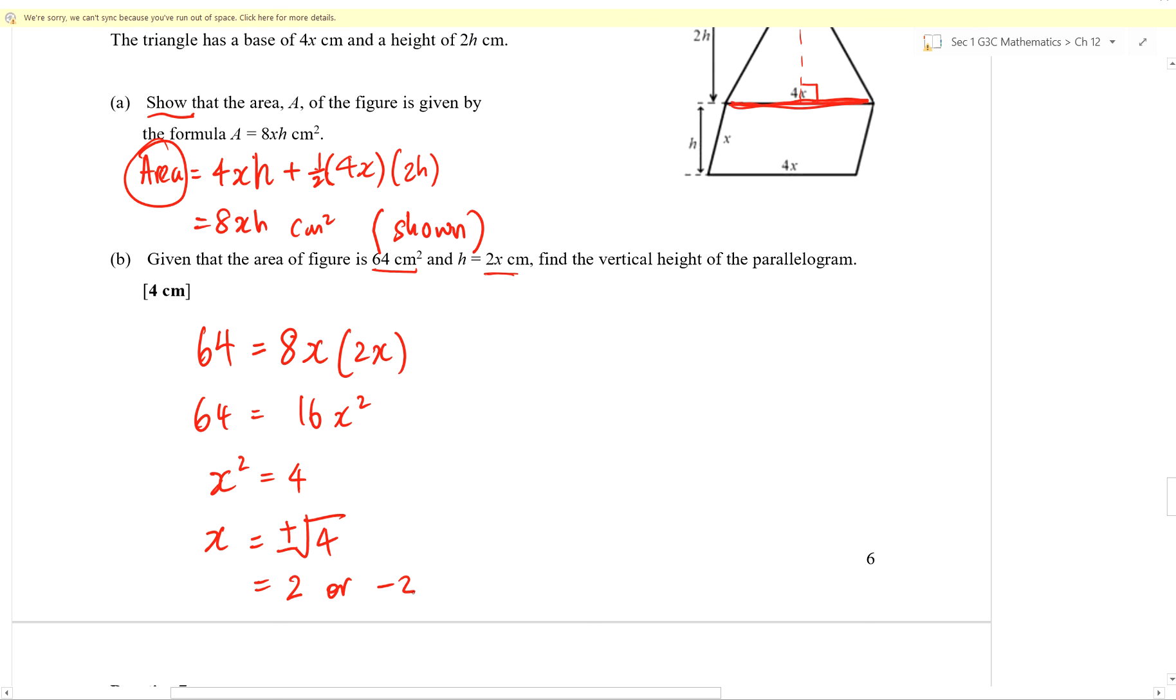Because when you square 2, 2² is 4. Even if you choose negative 2, open bracket, negative 2, close bracket, you square, you also get 4. Negative times negative will give you positive. So, we have two possible values of X. But now, you need to be logical. Can we accept X equals to negative 2? Why cannot? Why not? Why can't X be negative 2?